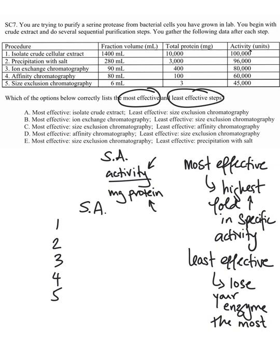After you isolated your crude extract, you have 100,000 units of activity and 10,000 milligrams of protein. The volume doesn't come into the calculation at all, but it's interesting to see that volume decreases with each successive step, because you're constantly getting rid of the proteins you don't care about. So the volume and total amount of protein will get less and less as you eliminate unwanted proteins.